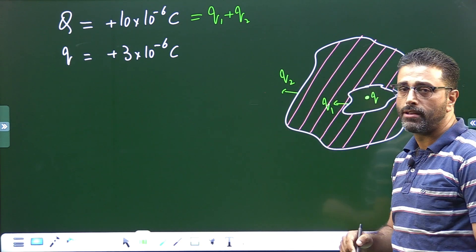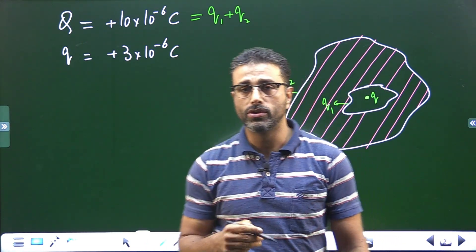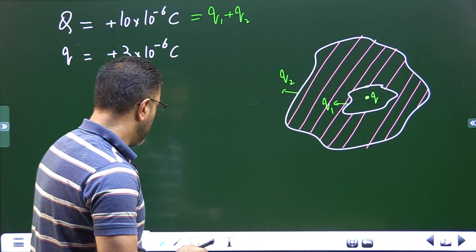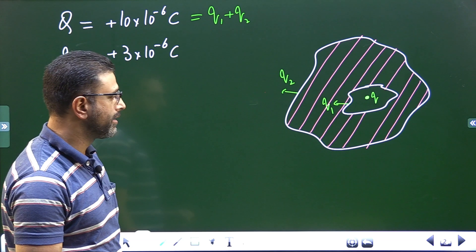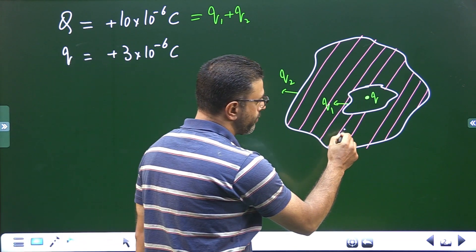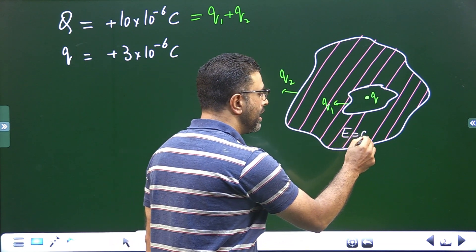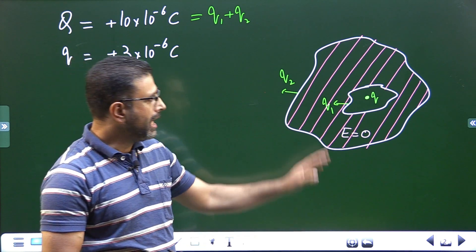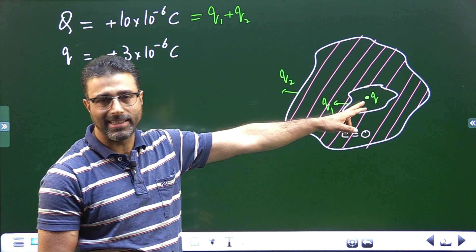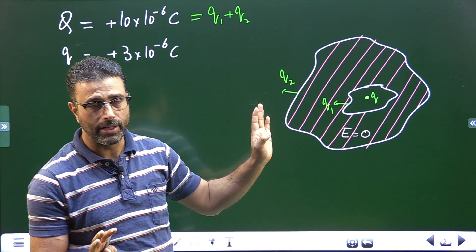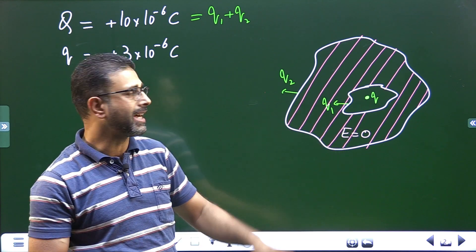We'll first find the charge on the inner surface using Gauss Law. You should be aware that the electrostatic field inside a metallic body is always zero at every point inside the material of the metal — not inside the cavity; we're not sure about the cavity. Inside the meat of the metal, the field is zero.